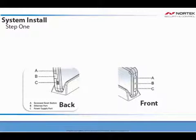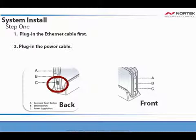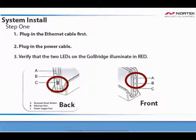To install the GoBridge properly, first plug in the Ethernet cable, then plug in the power. Verify that LEDs A and B are both illuminated red on the bridge before moving on.